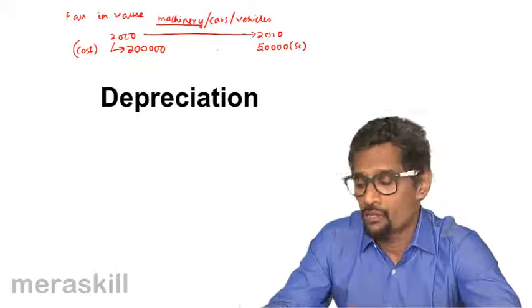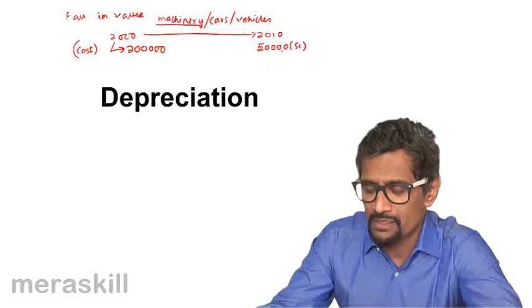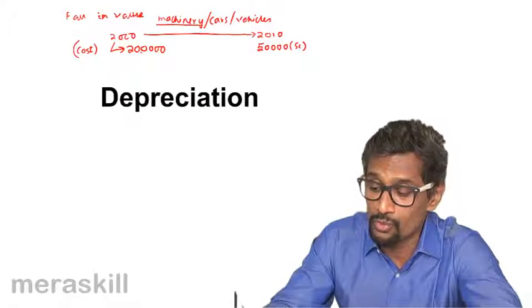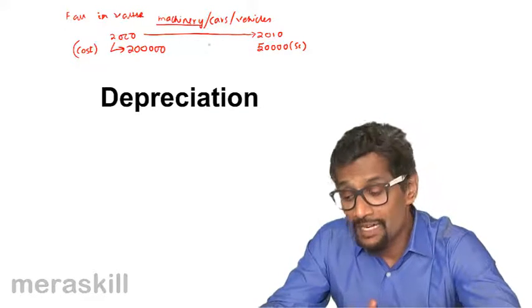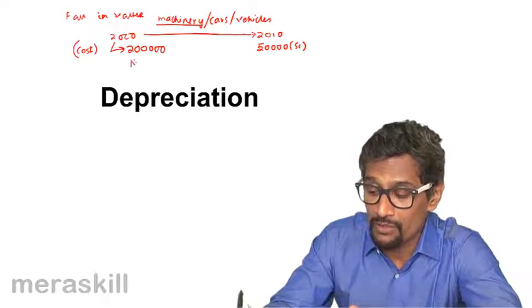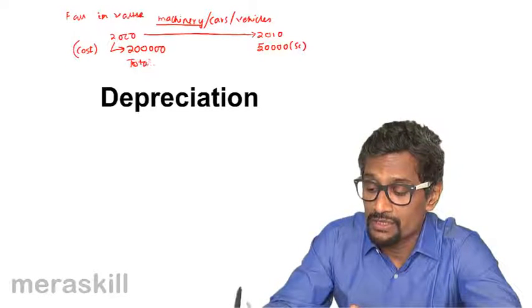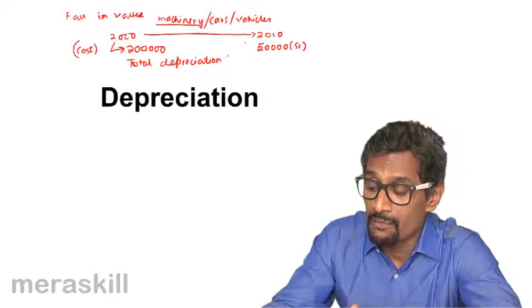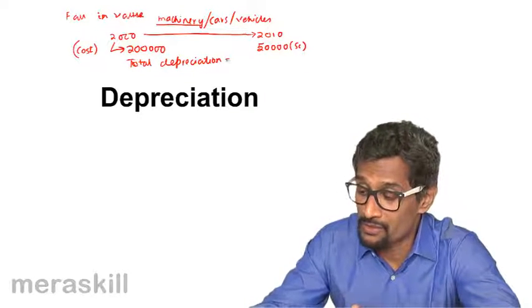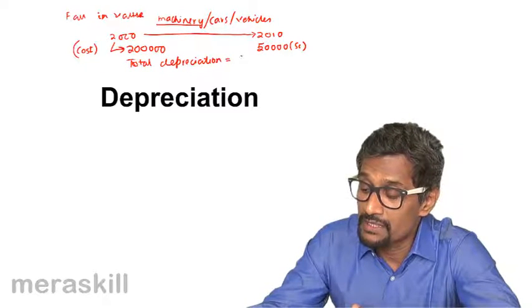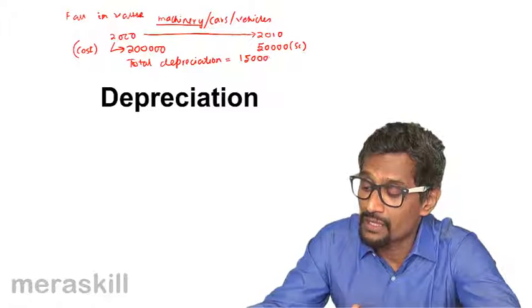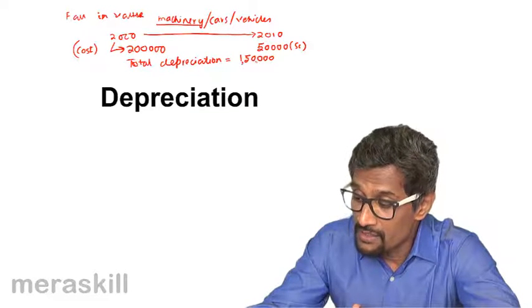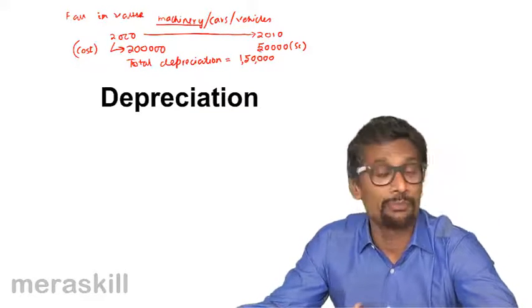So in a simple manner, you see that there is a fall in the value from 2 lakh to 50,000. And that fall in the value is called the total depreciation. So the total depreciation is equal to the cost minus the scrap value. That is 2 lakh minus 50,000, 1 lakh 50,000.